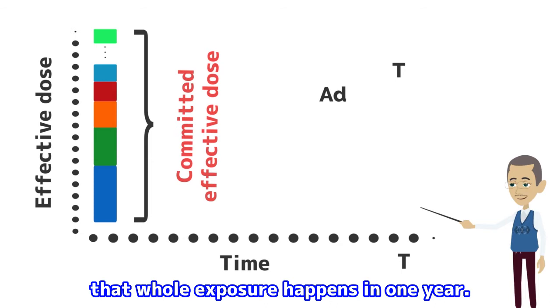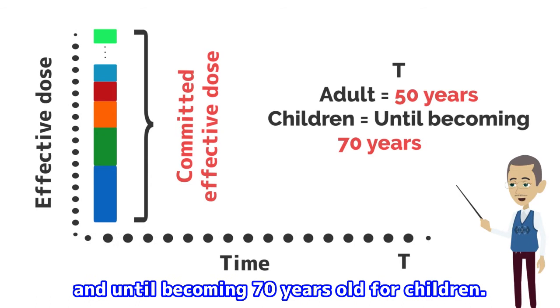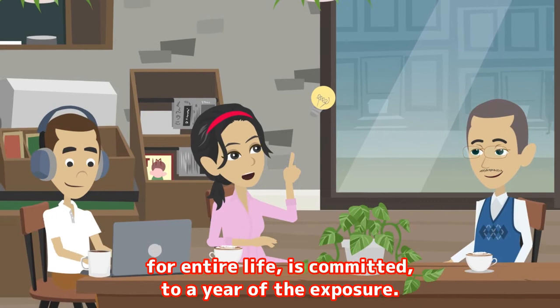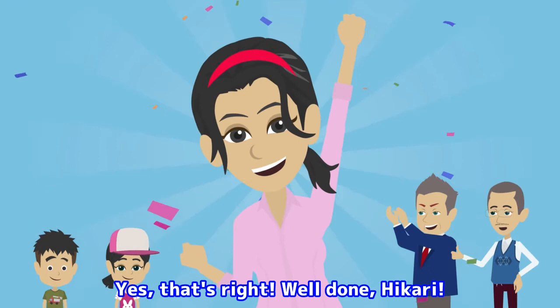This time t is determined as 50 years for adults, and until becoming 70 years old for children. It is called 'committed' because the exposure dose for the entire life is committed to the year of the exposure.